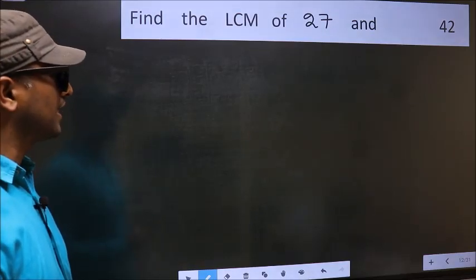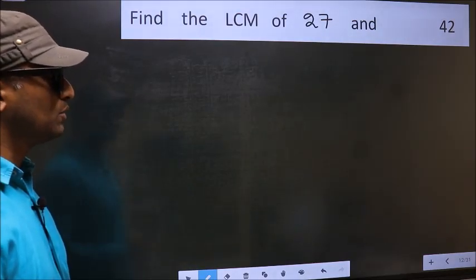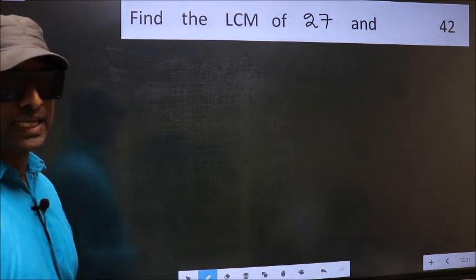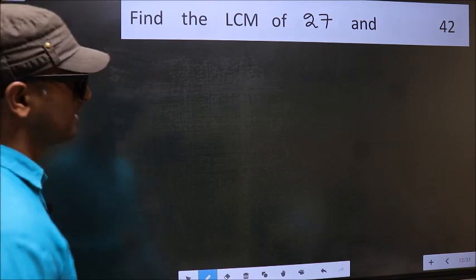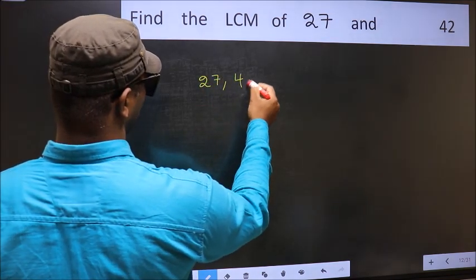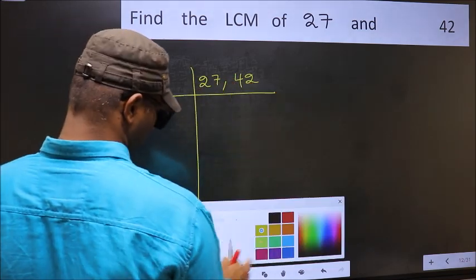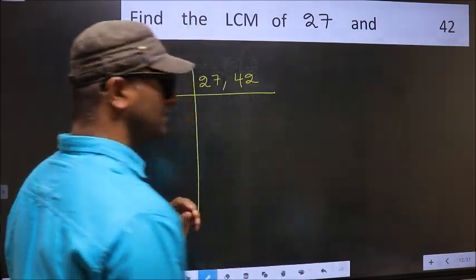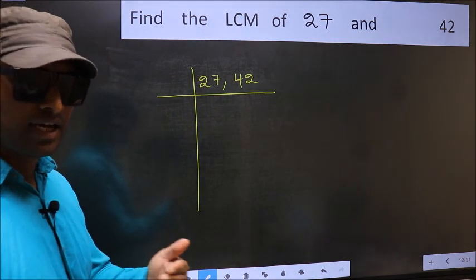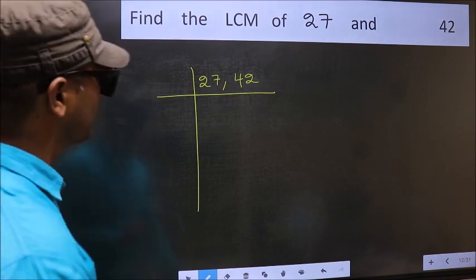Find the LCM of 27 and 42. To find the LCM, we frame it in this way: 27, 42. This is step one. Now you should focus on the first number, which is 27.